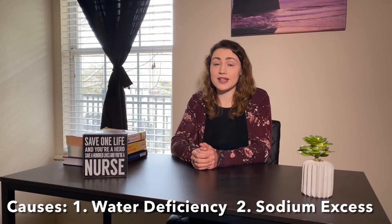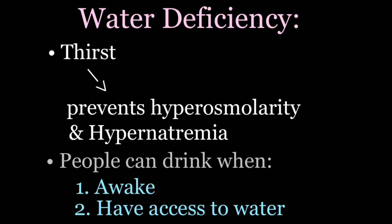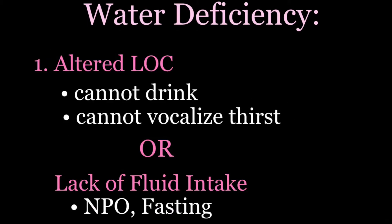Hypernatremia is caused by water deficiency or sodium excess. Our body protects itself against hyperosmolarity by increasing thirst, so hypernatremia will not typically be found in people who are alert and have access to water. Hypernatremia is more likely found in someone who has an impaired level of consciousness, because this hinders the ability to drink water.